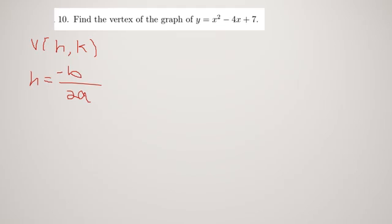And then k is the value of y when x equals h. So we need to compute h first. h equals negative b over 2a.